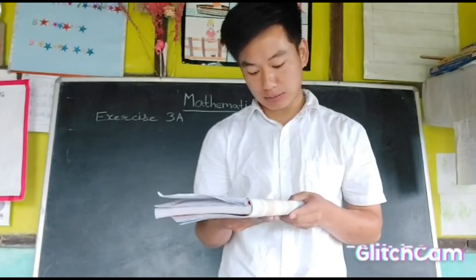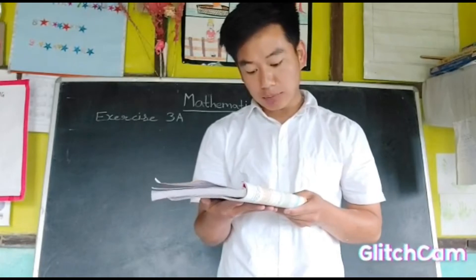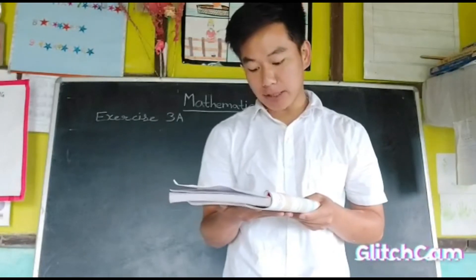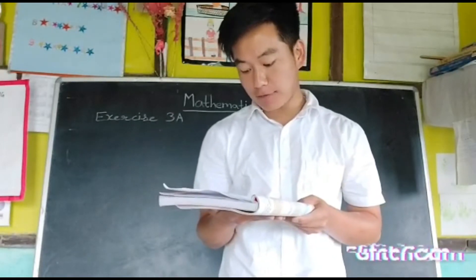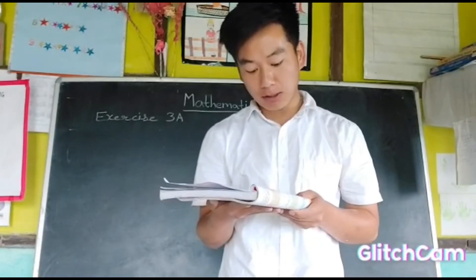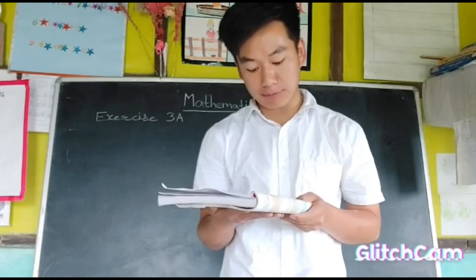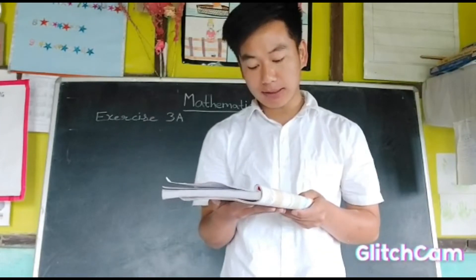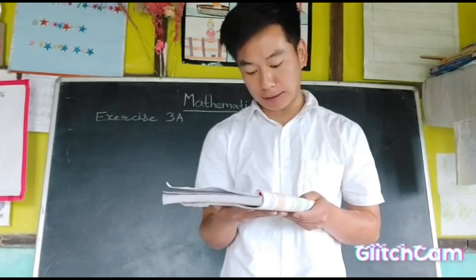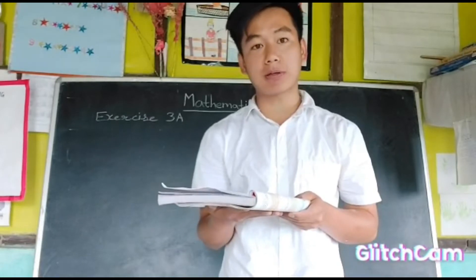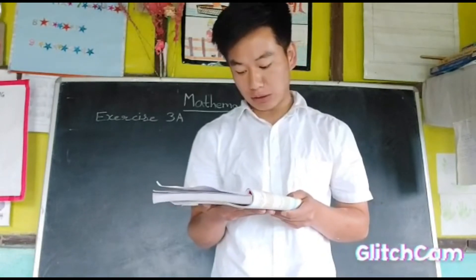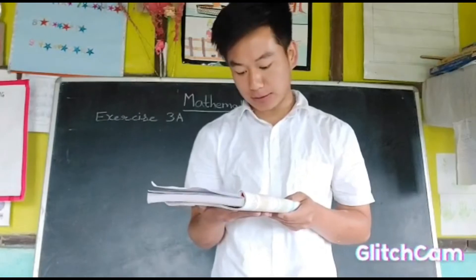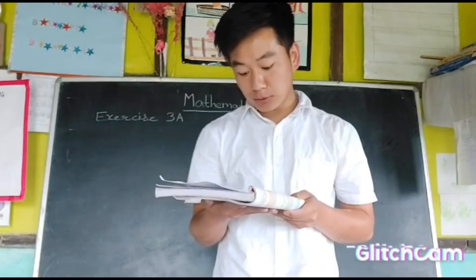Let us do question number 6. The number of people who travel by Delhi Metro on Wednesday was five lakh fifteen thousand two hundred and seventy three, on Thursday was four lakh twenty three thousand eight hundred and ninety four, and on Friday was six lakh five thousand and nine. This is the number of people that travel by Delhi Metro on Wednesday, Thursday, and Friday.